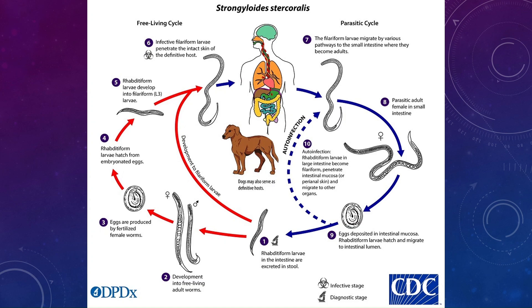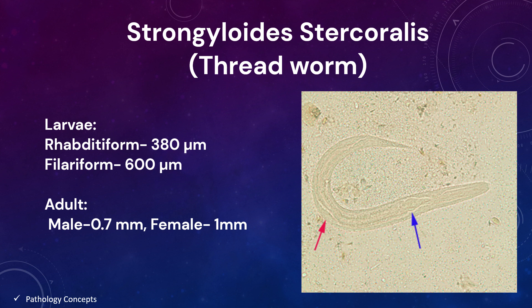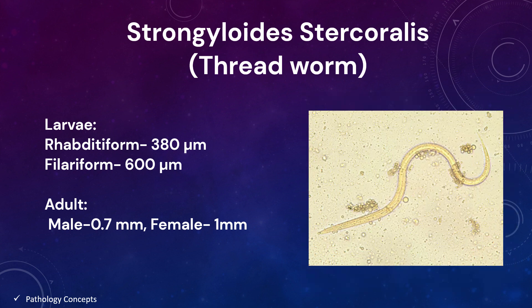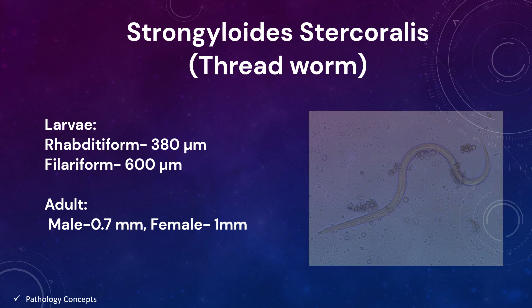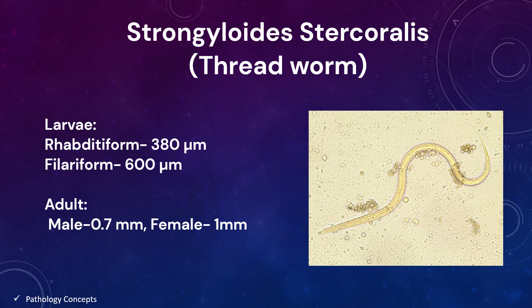The first-stage rhabditiform larva of Strongyloides stercoralis is 380 microns long, with a short buccal canal and a rhabditoid esophagus divided into three sections extending one-third of total body length, and has a prominent genital primordium. The infective third-stage filariform larva of Strongyloides stercoralis is 600 microns long; the tail is notched and the esophagus-to-intestine ratio is 1:1, which helps distinguish it from hookworm filariform larvae, which have a short esophagus and pointed tail. The infective L3 larvae are found in soil and can invade the human host by direct penetration of intact skin.